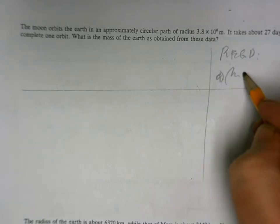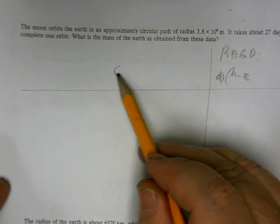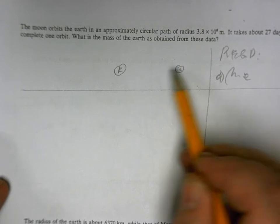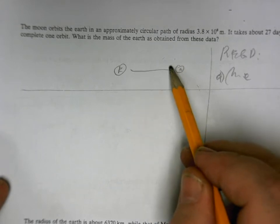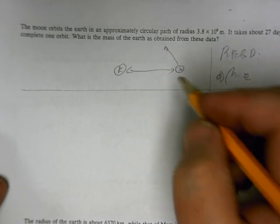But this time, I hope you see the method, right? This is the Earth and this is the Moon. The Moon is going around the Earth in a circle.